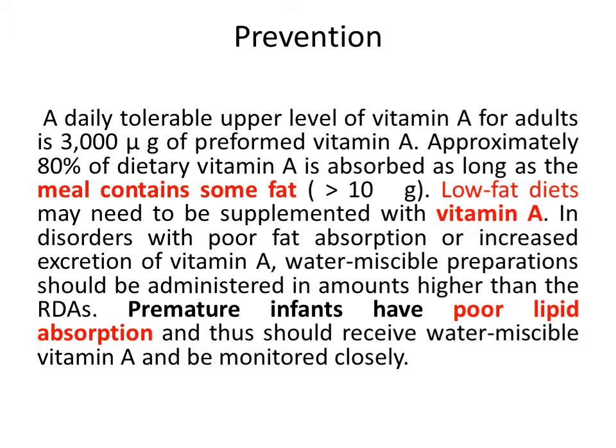A daily tolerable upper level of vitamin A for adults is 3000 microgram of preformed vitamin A. Approximately 80% of dietary vitamin A is absorbed as long as the meal contains some fat — more than 10 grams. Low fat diets may need to be supplemented with vitamin A. In disorders with poor fat absorption or increased excretion of vitamin A, water miscible preparations should be administered in amounts higher than the RDAs. Premature infants have poor lipid absorption and thus should receive water miscible vitamin A and be monitored closely.